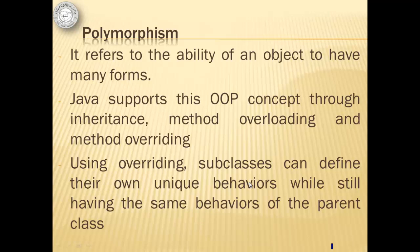Using overriding, subclasses can define their own unique behaviors while still having the same behaviors of the parent class. Our previous lesson about interfacing is already an example of polymorphism, as the interface's abstract methods were utilized in different forms by the two classes. In this lesson, we will discuss polymorphism using method overriding.